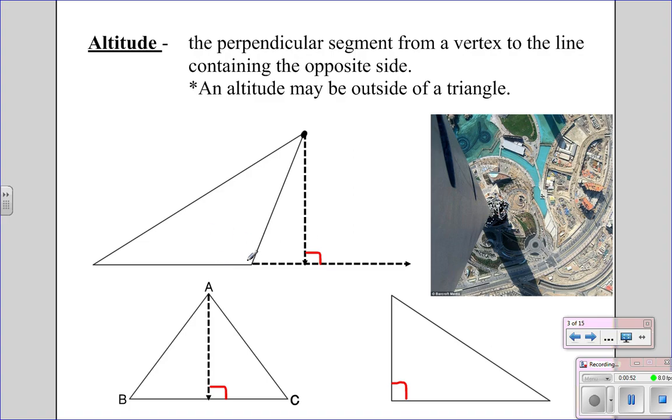We could also make an altitude from this vertex and make a 90-degree with the side as well. And of course, you could also make it with this vertex out here, and it would make a 90-degree with the side as well. On an acute triangle, the altitude will stay on the inside, so the distance from the vertex to the opposite side at a 90-degree angle.